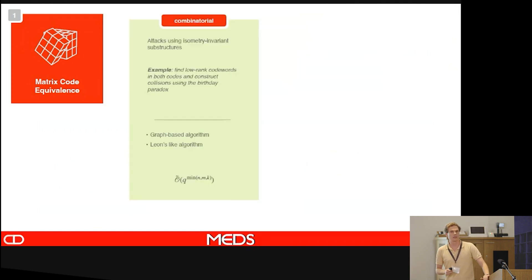I was talking about matrix code equivalents, but first let's look at the hardness assumption. There's basically two kinds of attacks to try to break this. The first is combinatorial, and this is the same as with LESS. We try to find low rank code words, and then we try to use the birthday paradox to map them together. If we find two code words collisions, then we can reconstruct the isometry.